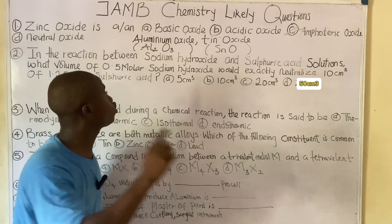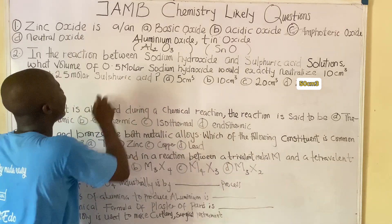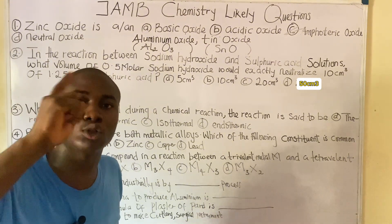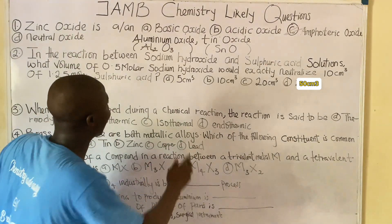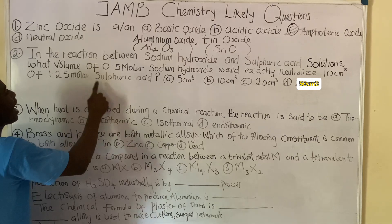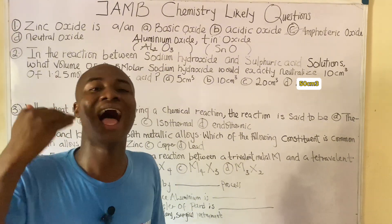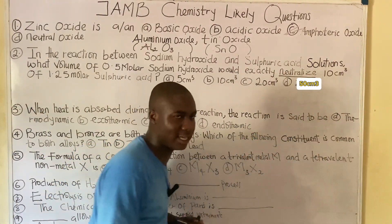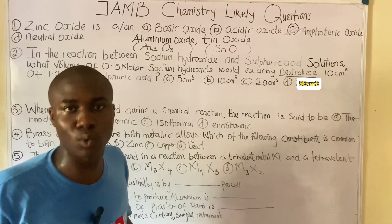Moving to the next question: In the reaction between sodium hydroxide and sulfuric acid solutions, what volume of 0.5 molar sodium hydroxide would exactly neutralize 10 cm³ of 1.25 molar sulfuric acid? Whenever we see the word 'molar,' that refers to concentration. I saw the word 'neutralization,' so this is a neutralization reaction between an acid and a base to form salt and water.